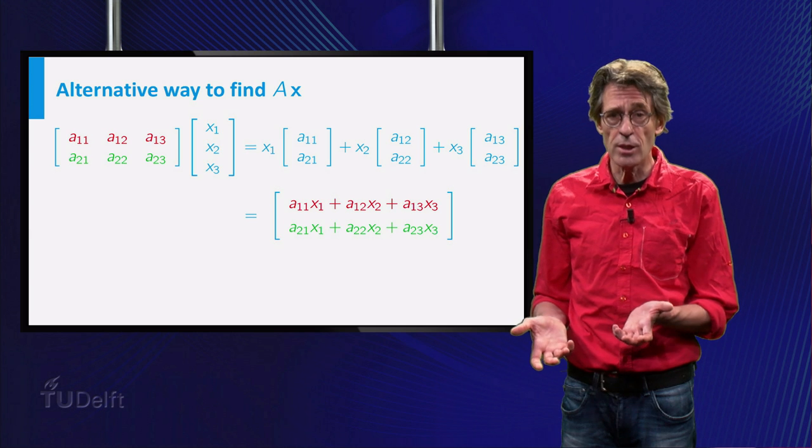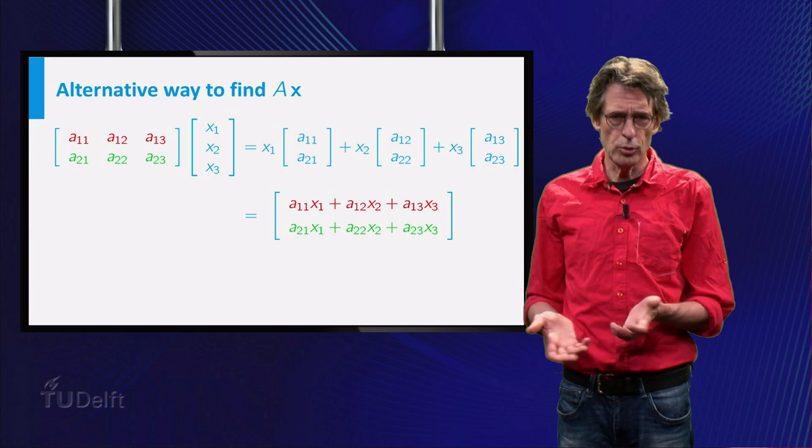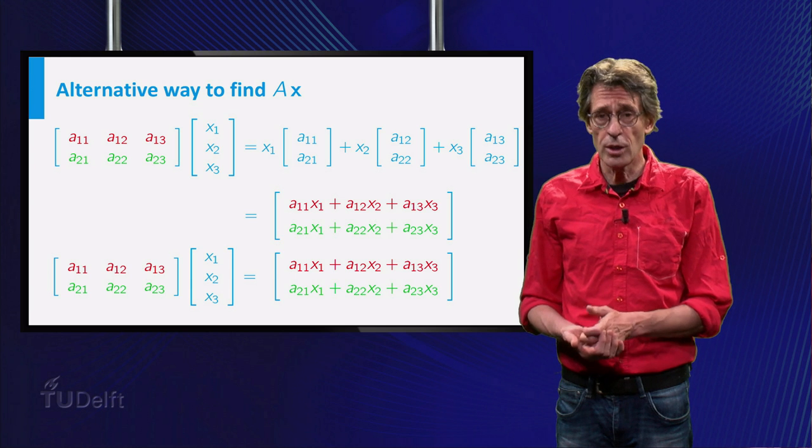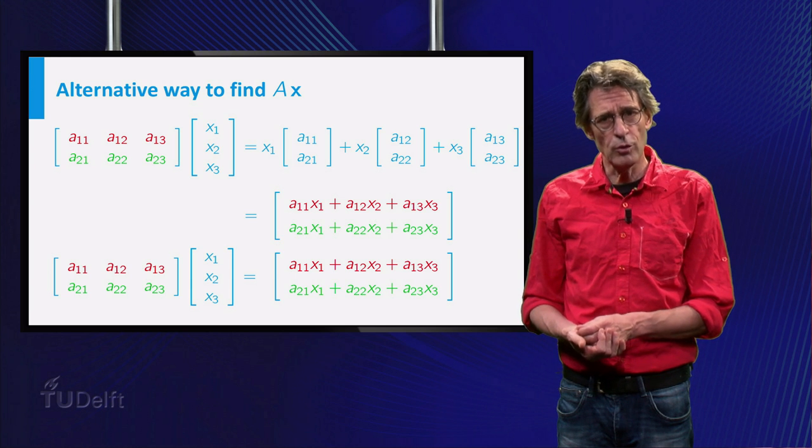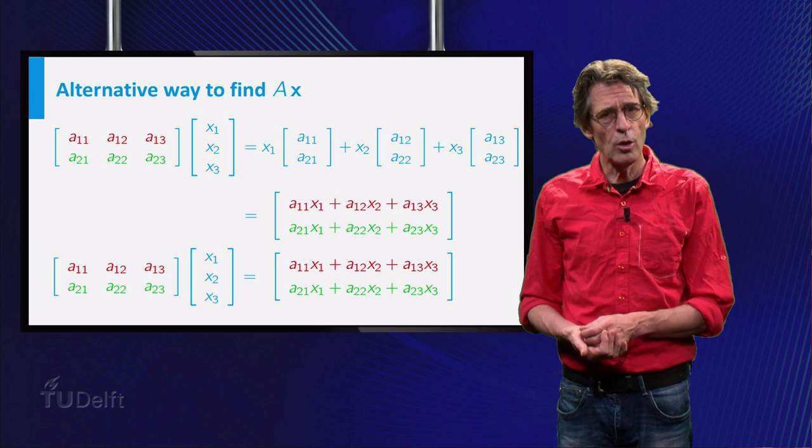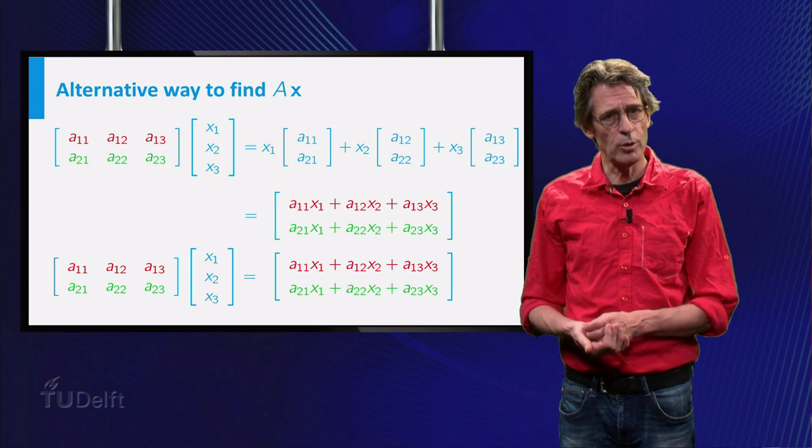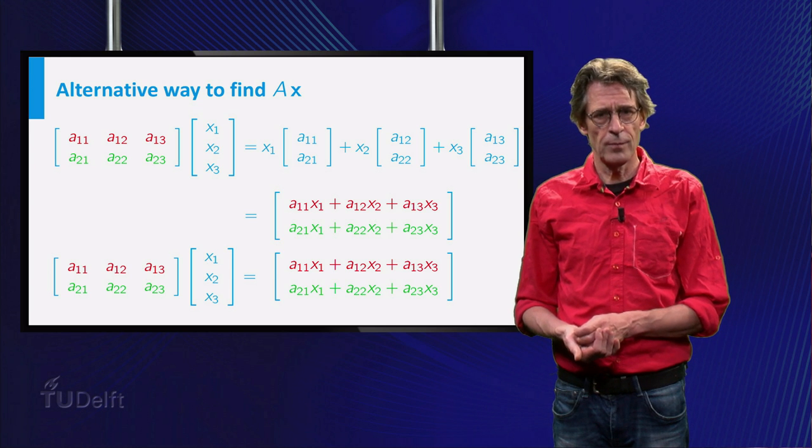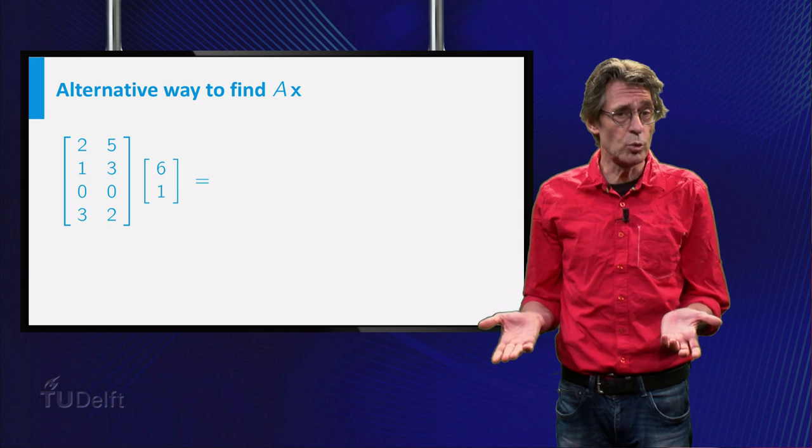Coloring spices it up. It shows that for instance the first element of the product, on the slide this is in red, is the result of multiplying the elements of the first row of A with the elements of x, and adding these products. Likewise for the other elements. The intermediate form could just as well be skipped.